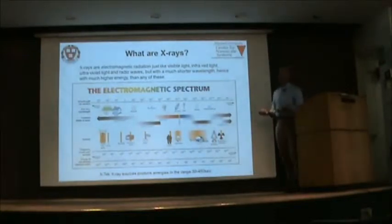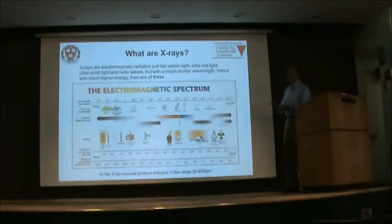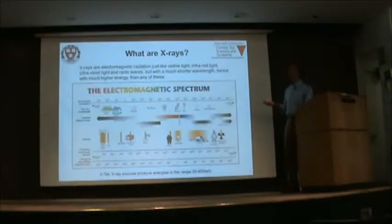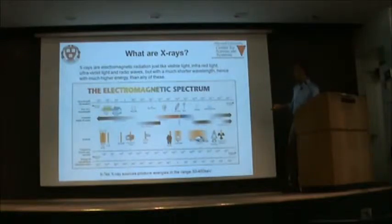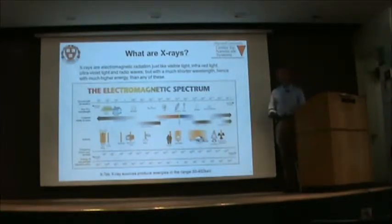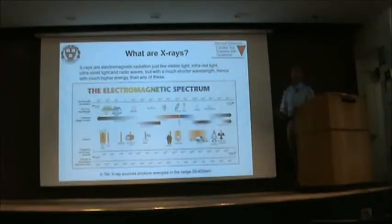So what are X-rays? X-rays are electromagnetic radiation, just like visible light, infrared, ultraviolet, and radio waves, but with much shorter wavelength. If you look at the electromagnetic spectrum, visible light is a very narrow section. Infrared is on the left, ultraviolet here. Then you see soft X-rays and hard X-rays. Soft X-rays stand for lower energy X-rays, and hard X-rays designate higher energy X-rays that have more penetrating power through materials.